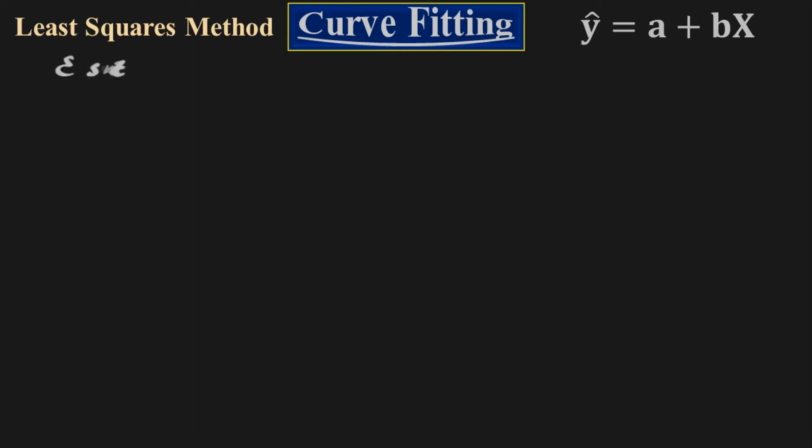The problem is to estimate the crime rate for July and August. I have to do the approximation for the crime rate for the upcoming July and August months using the least squares method. Let's do it.